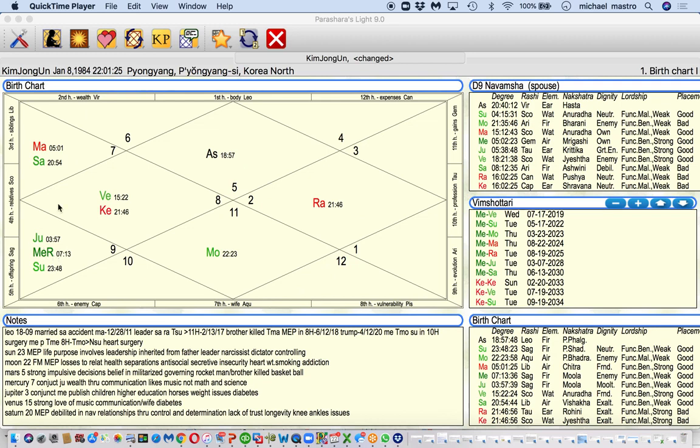Any planet like Saturn, like Ketu Rahu, like Sun, like Moon, they're within five degrees have a lot of impact in the chart. So we want to look and see how the planets are operating and when they're operating and what we could do to rectify the chart.